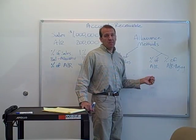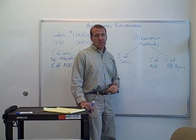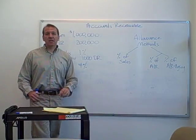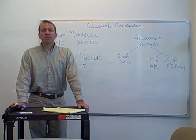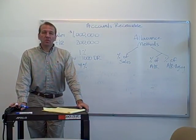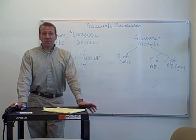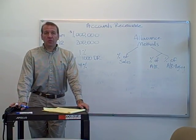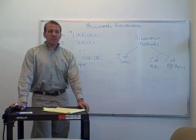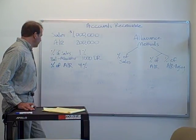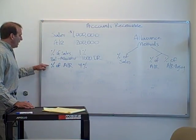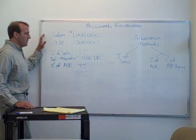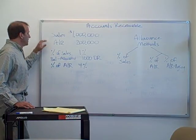This is really my favorite method — the percentage of accounts receivable — because what you do is take your accounts receivable and multiply it by a percentage that you think is going to be uncollectible. Let's take a look. I've now added this line; this is the same information from the first video.